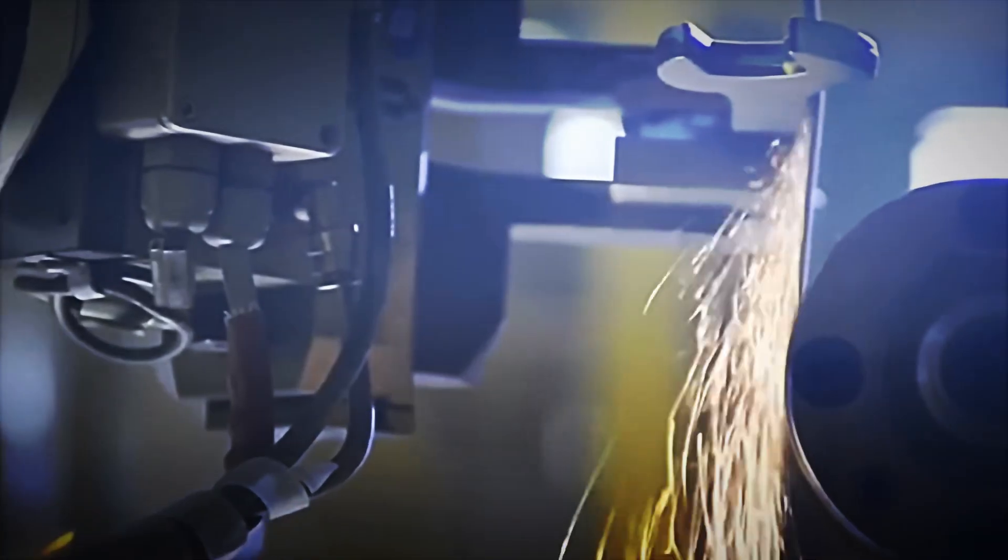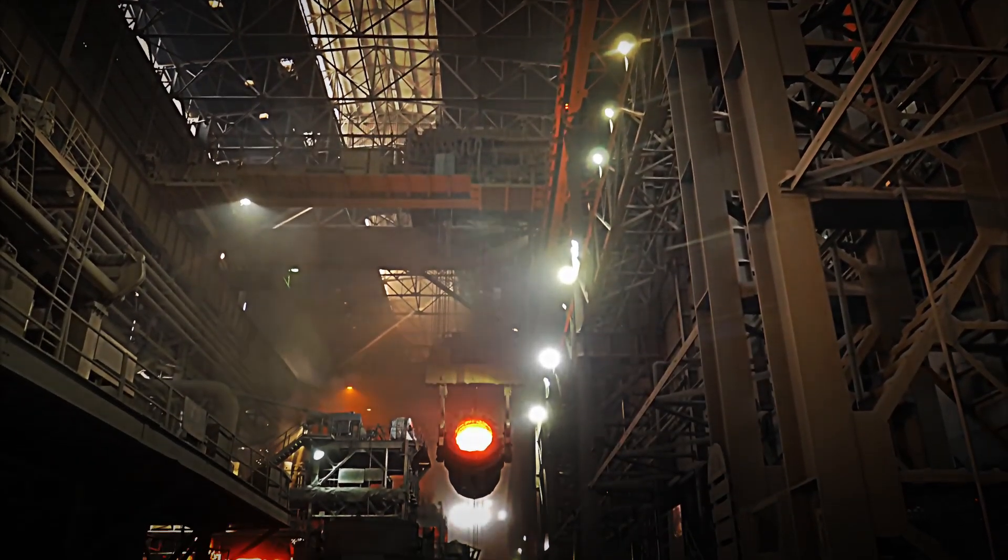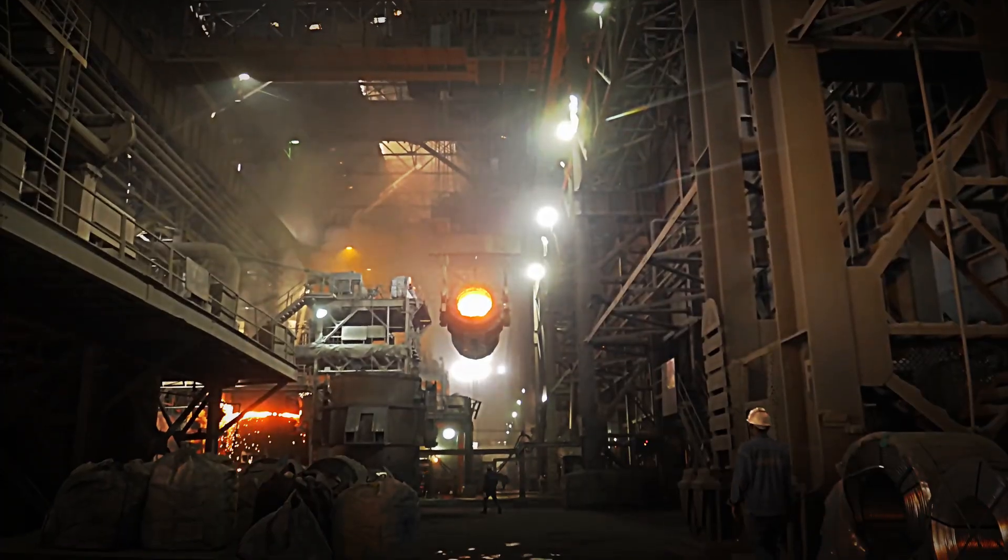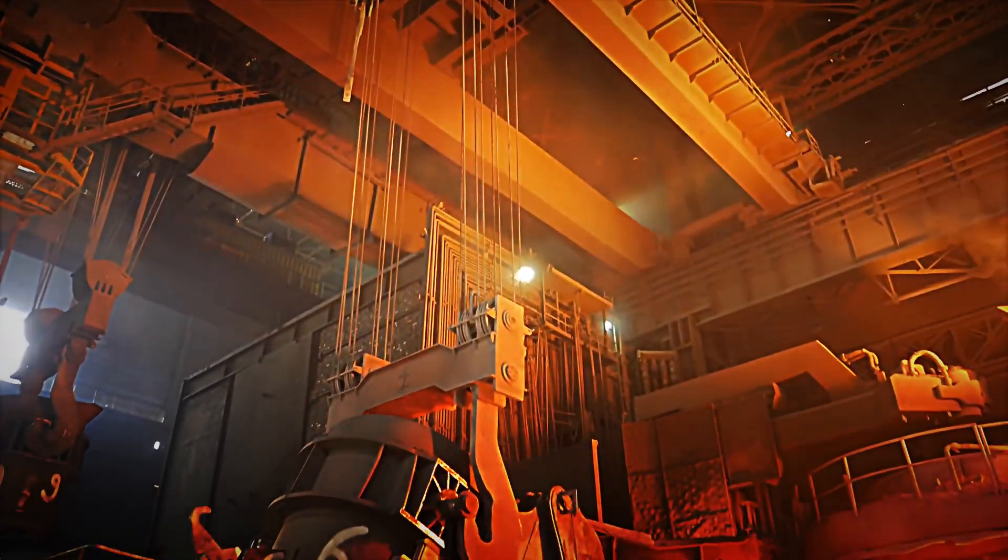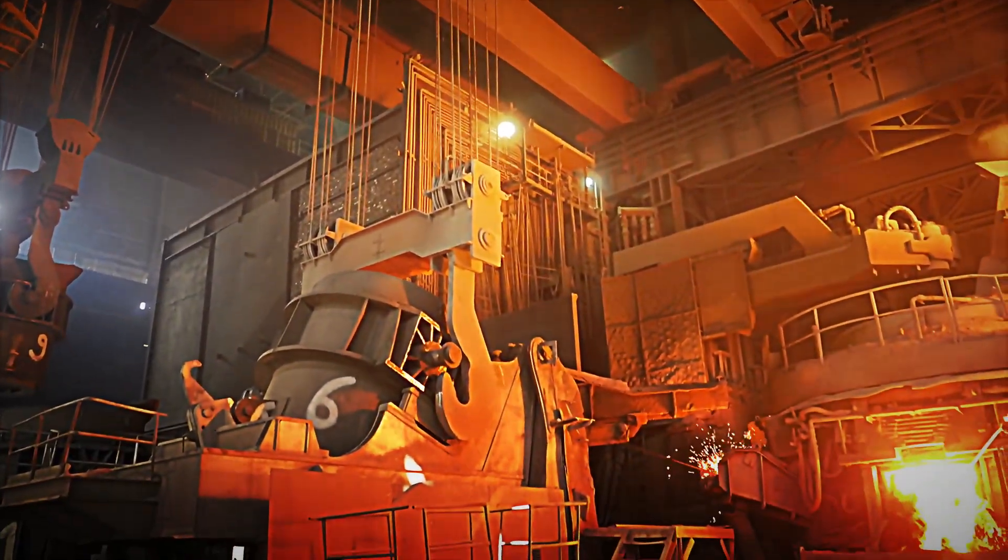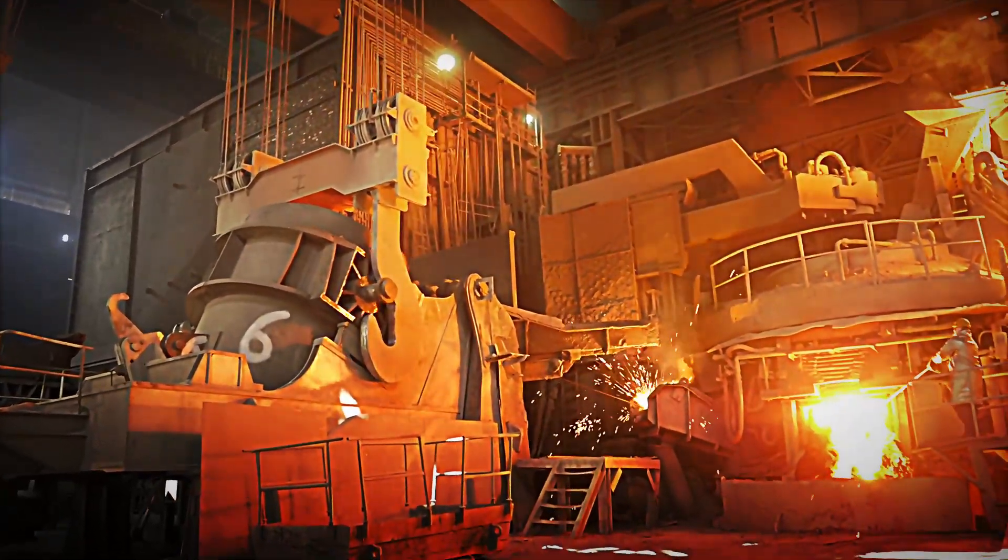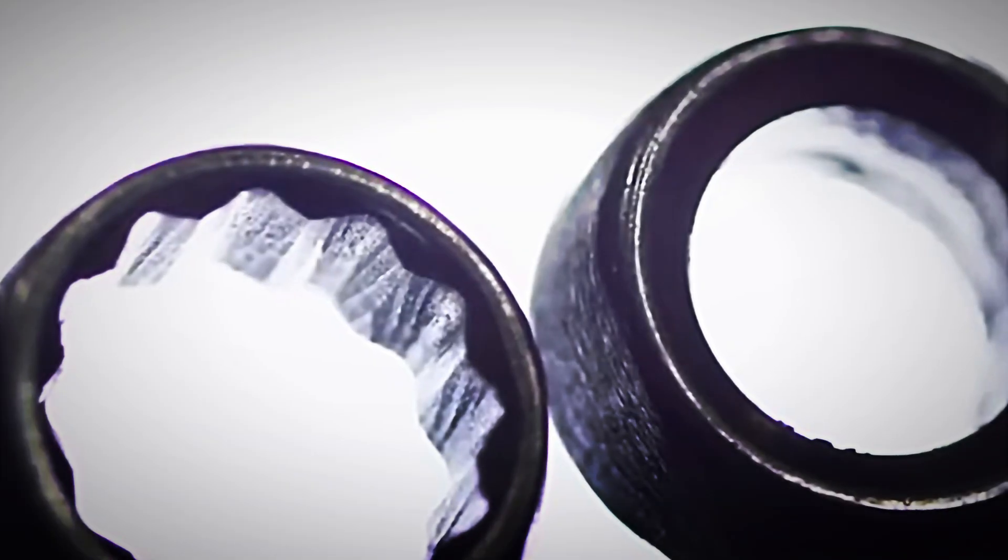It all begins with austenitizing, where the parts are placed in furnaces that reach temperatures between 780 and 880 degrees Celsius. At this temperature, the internal structure of the steel is transformed, making it suitable for subsequent hardening.